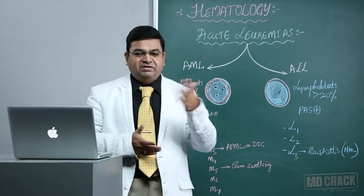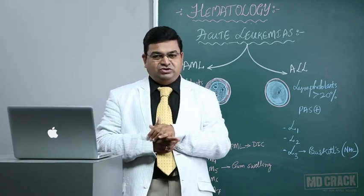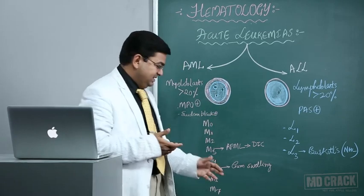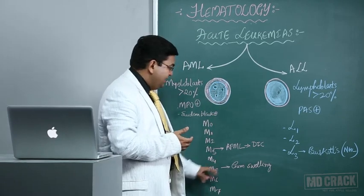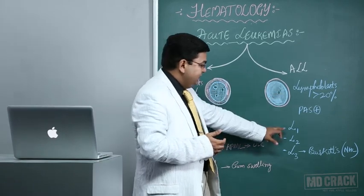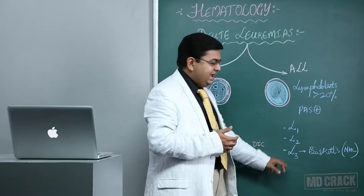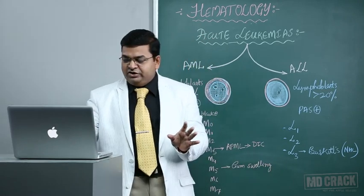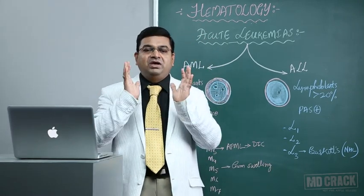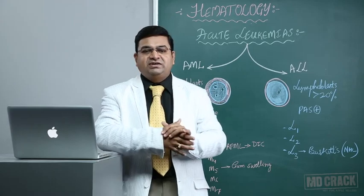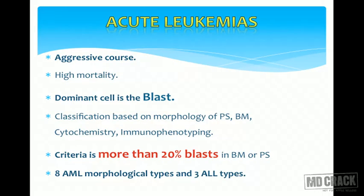The FAB classification — accepted by WHO — divides AML into M0 to M7 (eight types) and ALL into three types: L1, L2, and L3. Remember that acute leukemias have a highly aggressive course; the patient can deteriorate within weeks to months, and the mortality rate is very high. You have to diagnose these cases as early as possible.